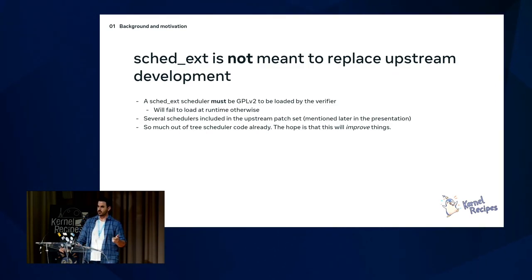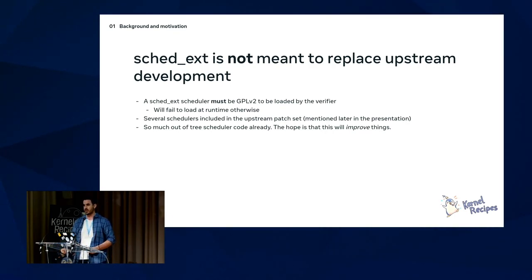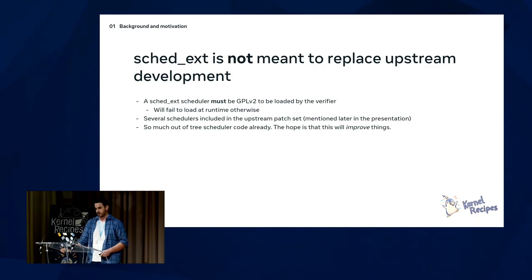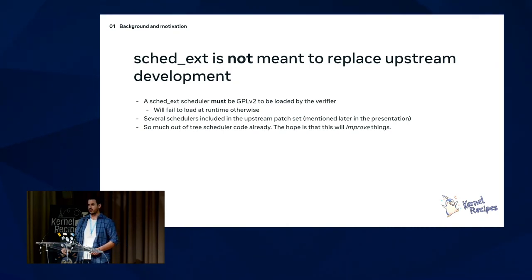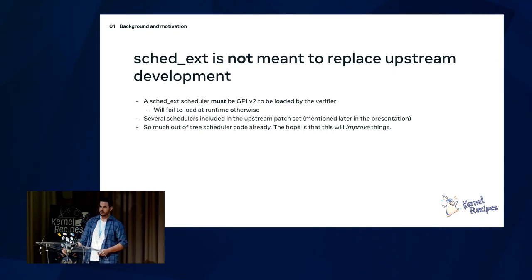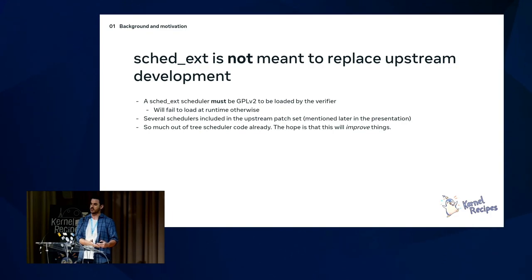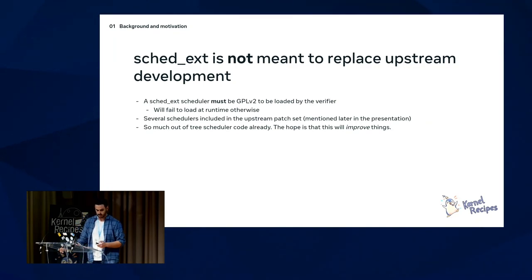You have to be GPLv2 to use sched_ext — it's not just a soft requirement; the verifier will actually fail to load your scheduler if it is not GPLv2. We're including example schedulers as part of the upstream patch set, which you could also use in production. There's a lot of out-of-tree scheduler code out there, and we're hoping that by forcing GPLv2 and giving people a way to add scheduler logic to the kernel tree without adding it to CFS, we'll aggregate more code upstream.